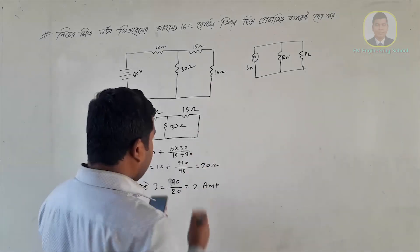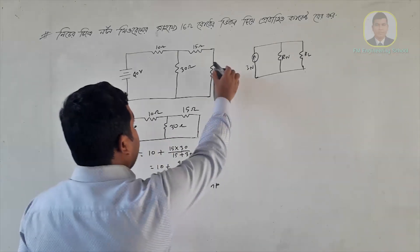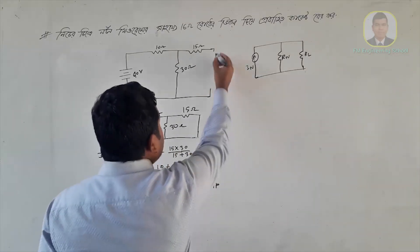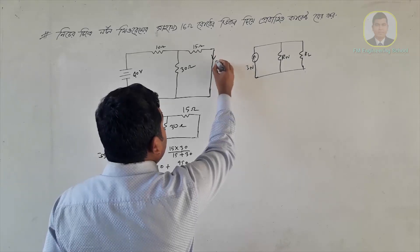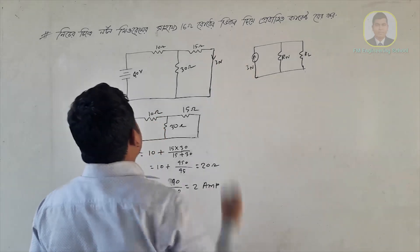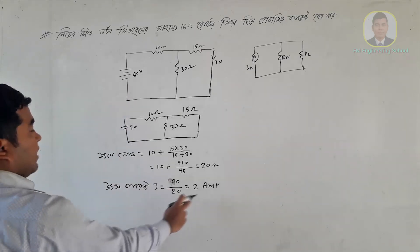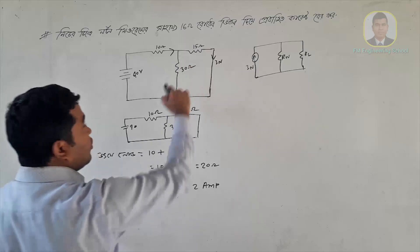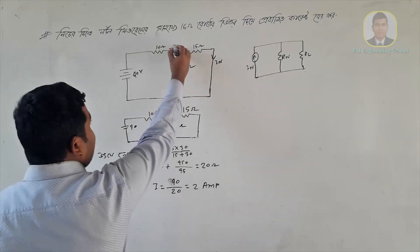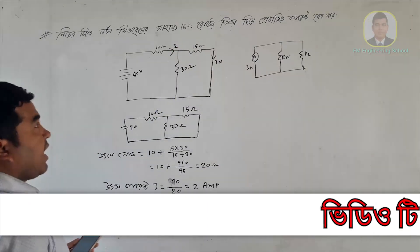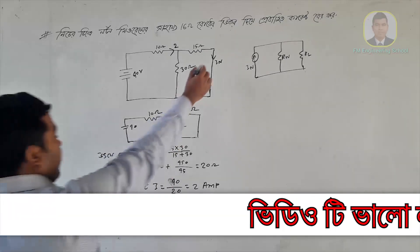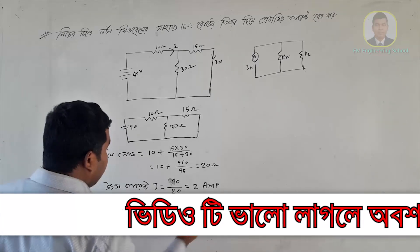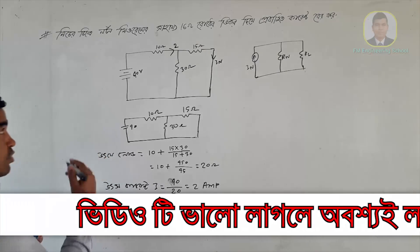We can determine what percentage of number one is. We can see the number one which shows the load current. We can see how much current is present, so we put the tube of capacitor to use the current divider.